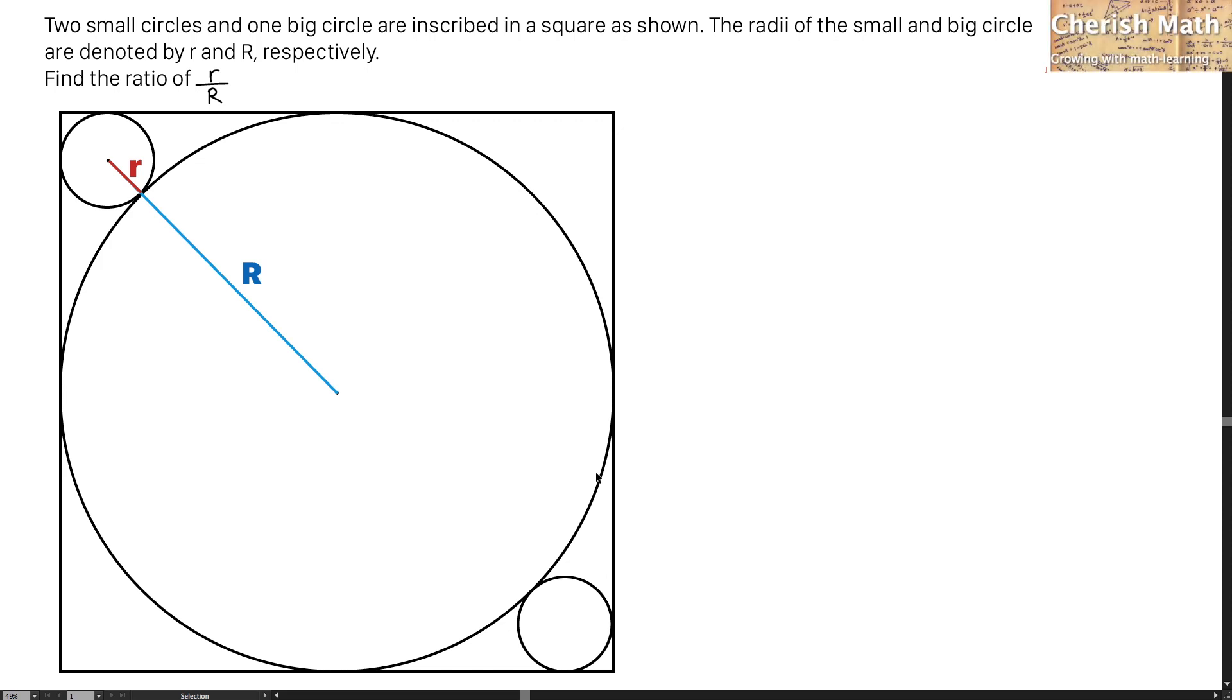Say hi from Cherish Math, and this is the question. Two small circles and one big circle are inscribed in a square as shown. The radii of the small and big circle are denoted by lowercase r and uppercase R, respectively. Find the ratio of r divided by R.